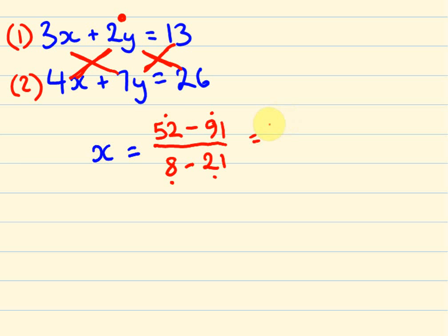So 52 take away 91, you're going to get the answer of how much? We're going to get 39, minus 39. And then 8 take away 21, we're going to get the answer of minus 13. So these negatives cancel each other out. 39 over 13, we get the answer 39 divided by 13 of 3. So x equals 3. That's a pretty cool method, right?